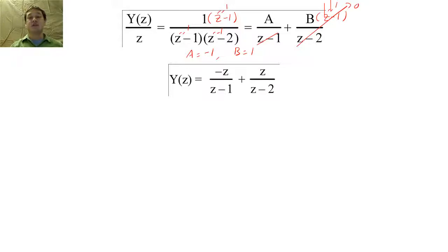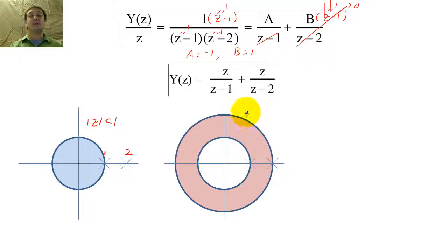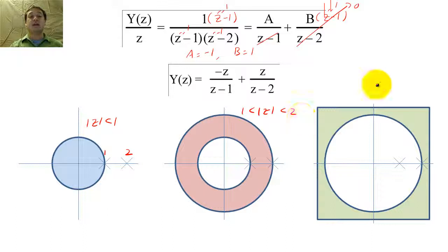From our equation, we know that Y of Z has two poles. We also know that the ROC will be bounded by the poles and it cannot include any poles. With this knowledge in hand, we find that there are three possible ROCs for Y. Absolute value of Z is less than both poles, absolute value of Z is between the poles, and the absolute value of Z is greater than both poles.